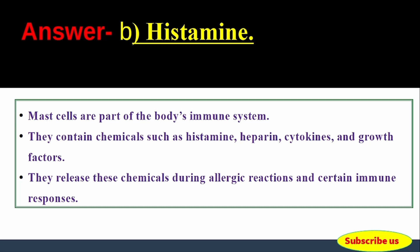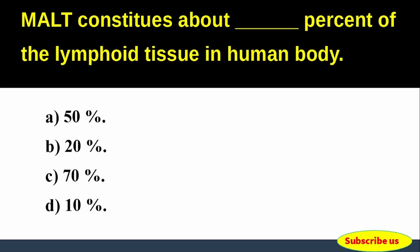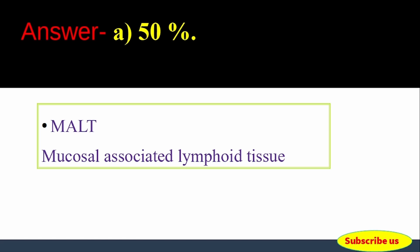They release these chemicals during allergic reactions and certain immune responses. Next question: MALT constitutes about how many percent of the lymphoid tissue in the human body? Options: 50%, 20%, 70%, 10%.